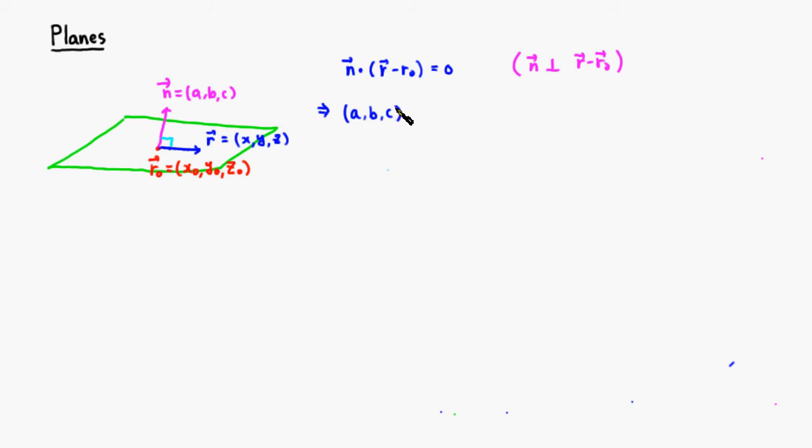take the dot product with x minus x0, y minus y0, and z minus z0. And that's equal to 0. Then you will get the product: a times x minus x0 plus b times y minus y0 plus c times z minus z